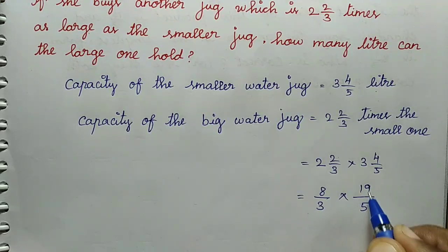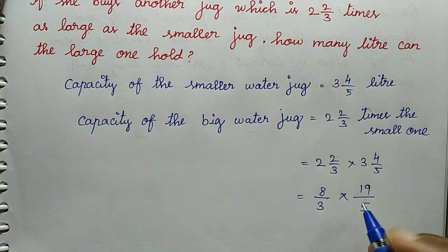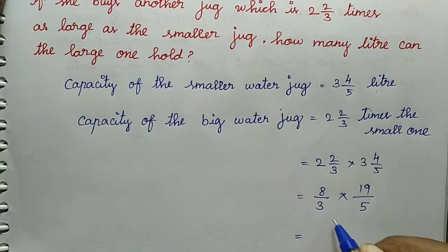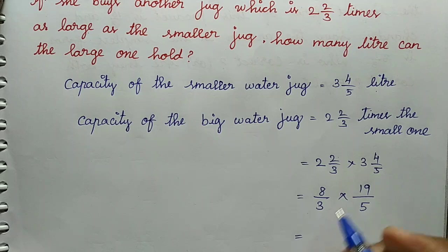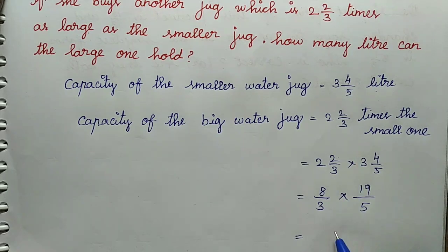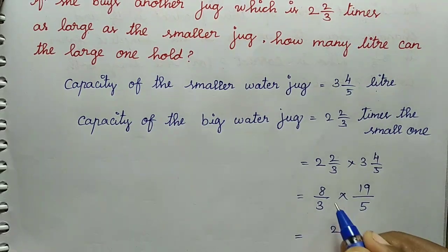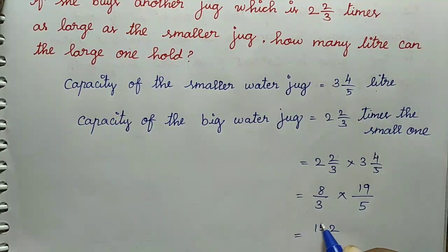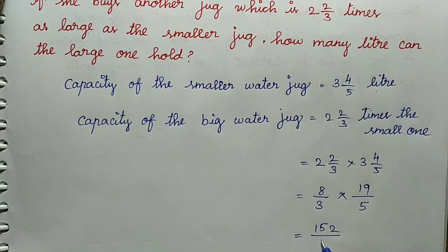In the 2 improper fractions may cross. All the factors are different, so numerator to numerator, denominator to denominator, multiply. 8 times 19 is 152. Remaining 7, 1 times 8 is 8, 8 plus 7 is 15, divided by 5 times 3 is 15.